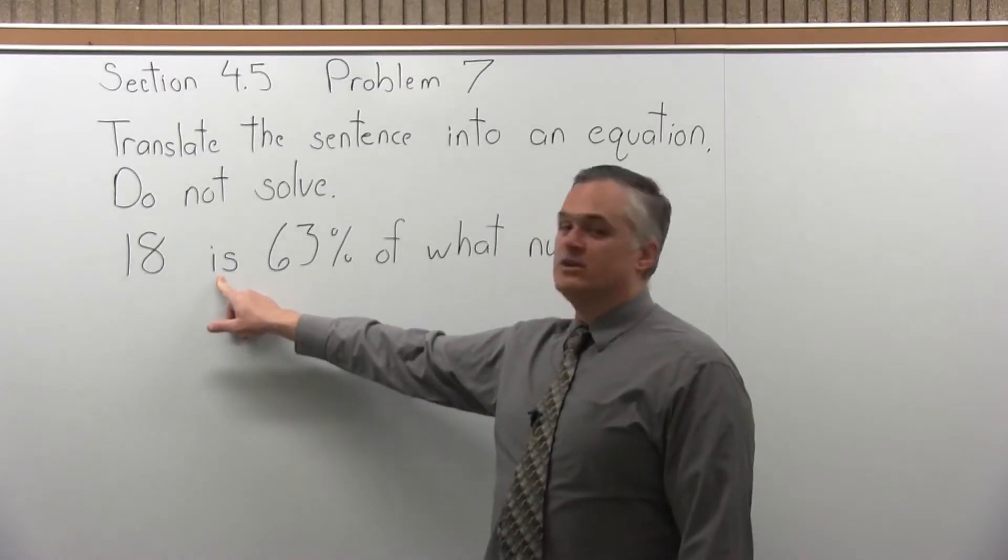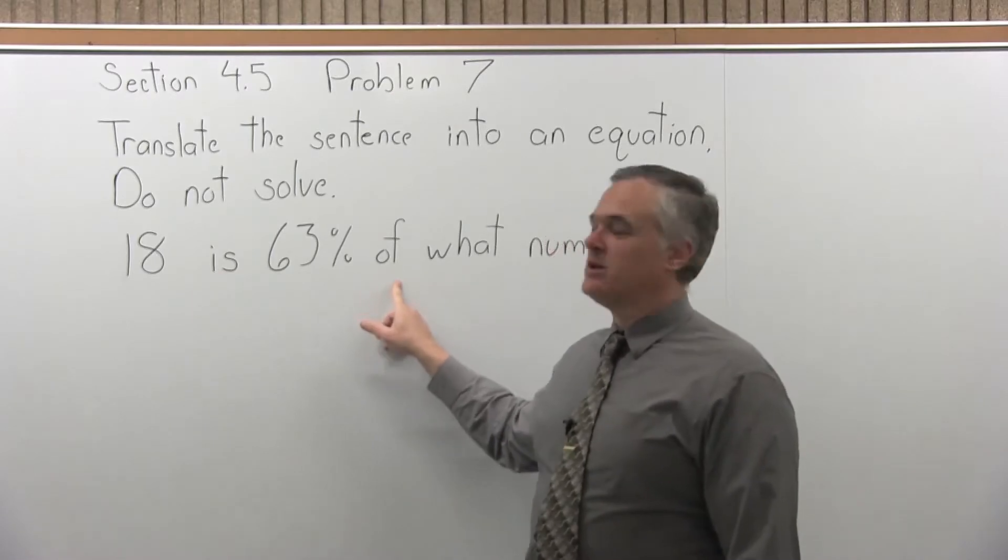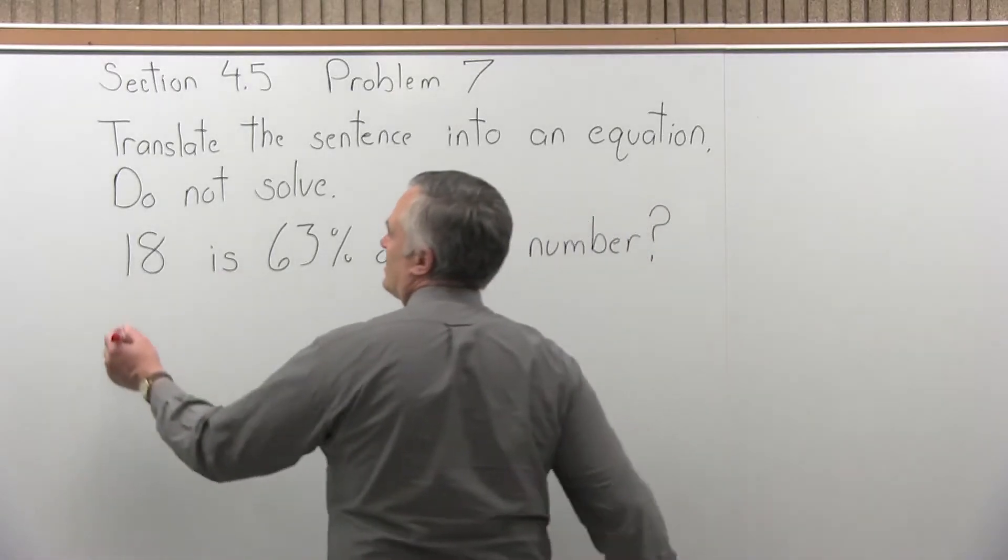So the key words will be is, that's going to be equals, and of, that will be multiply. So when we make it an equation,